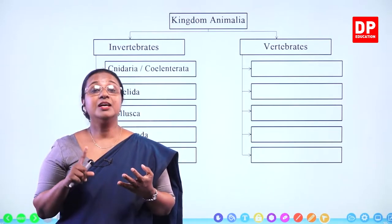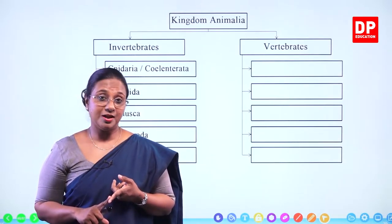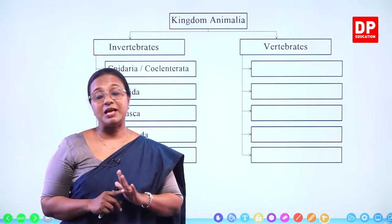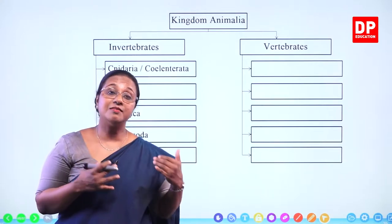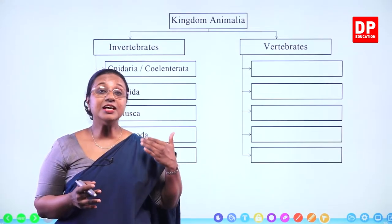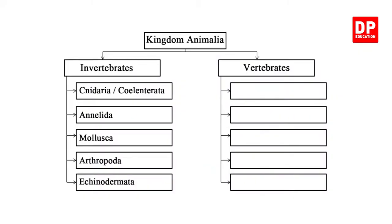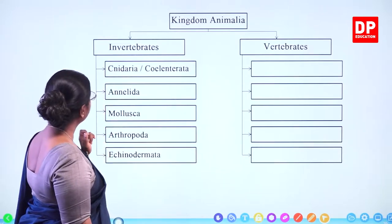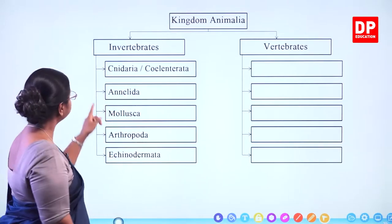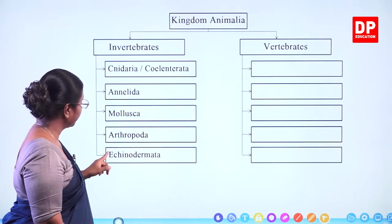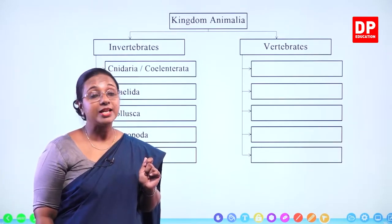Kingdom Protista, Kingdom Fungi, Kingdom Plantae, and Kingdom Animalia. Now under Kingdom Animalia, there are two main groups based on whether they possess a vertebral column or not. We discussed the invertebrates in the previous chapter, and now I am going to discuss vertebrates. If we take Kingdom Animalia, you know the invertebrates: Cnidaria, Platyhelminthes, Annelida, Mollusca, Arthropoda, and Echinodermata. Then we have the vertebrates.